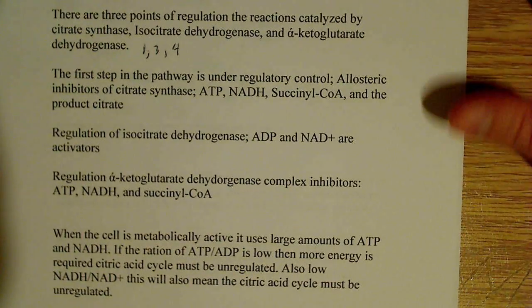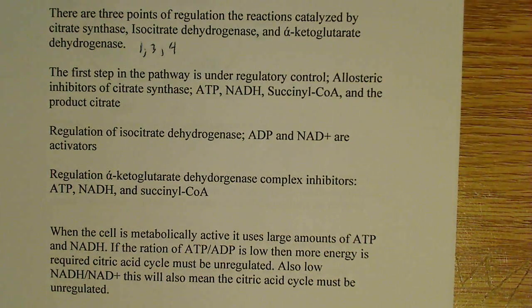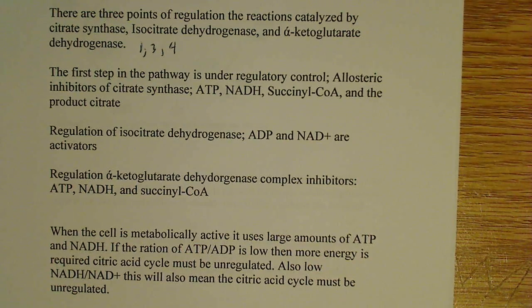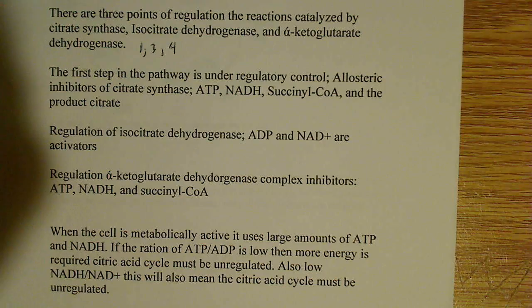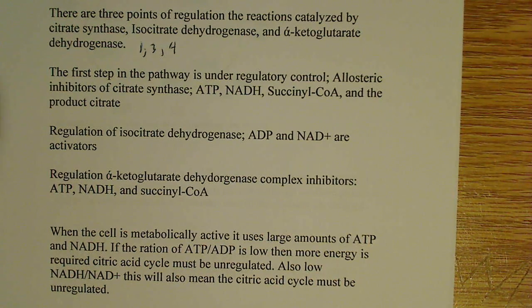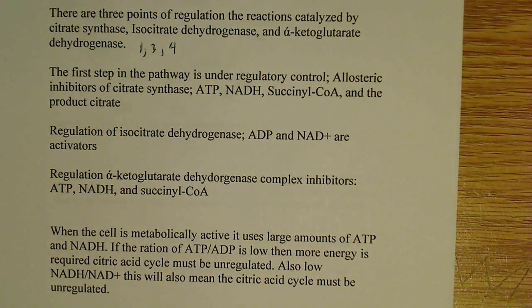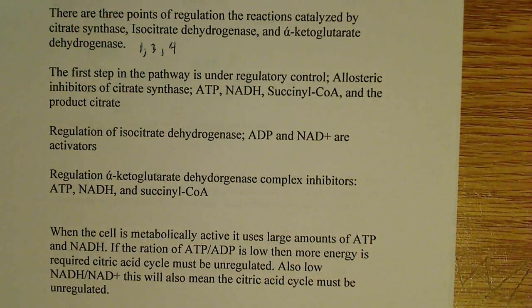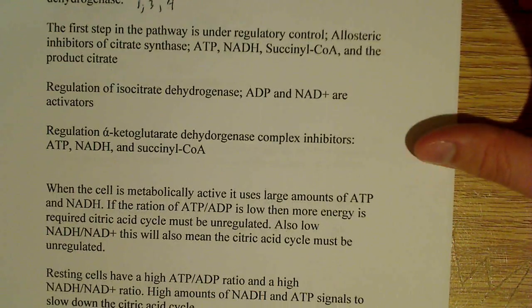The first step in the pathway is under regulatory control by allosteric inhibitors. The inhibitors of citrate synthase are ATP, NADH, succinyl-CoA, and the product citrate. That last one is feedback regulation — negative feedback from citrate. We produce enough citrate, we have plenty of it, there's no reason to make more. It's regulated by its own product, also known as product inhibition. Those are the allosteric inhibitors.